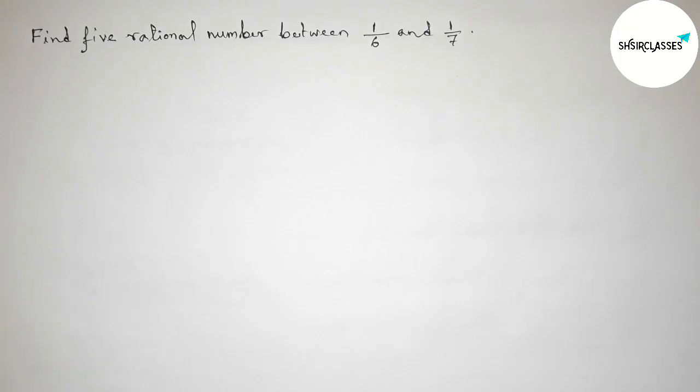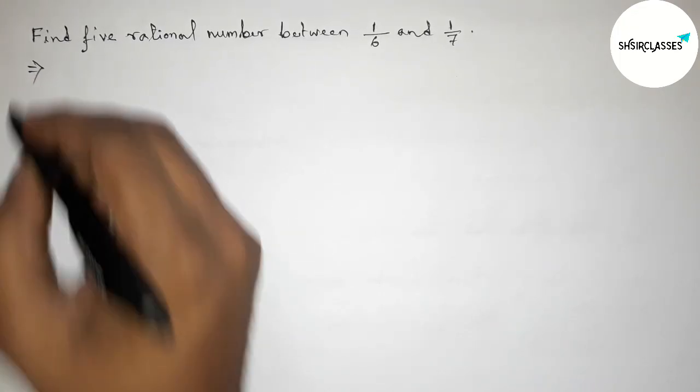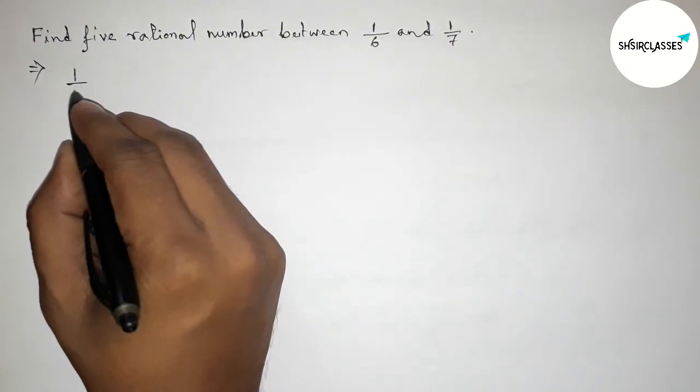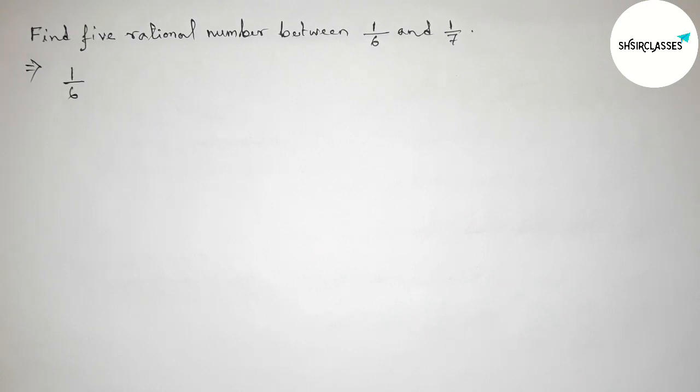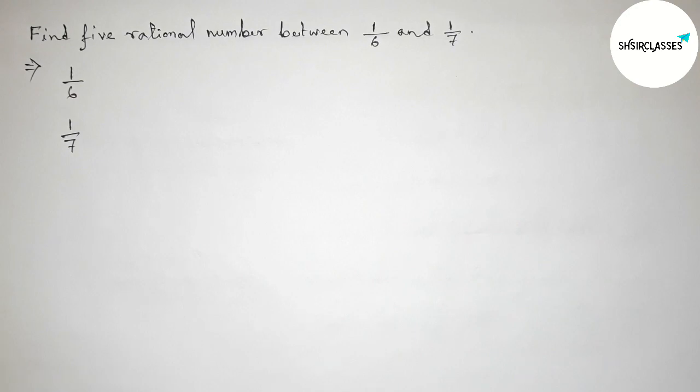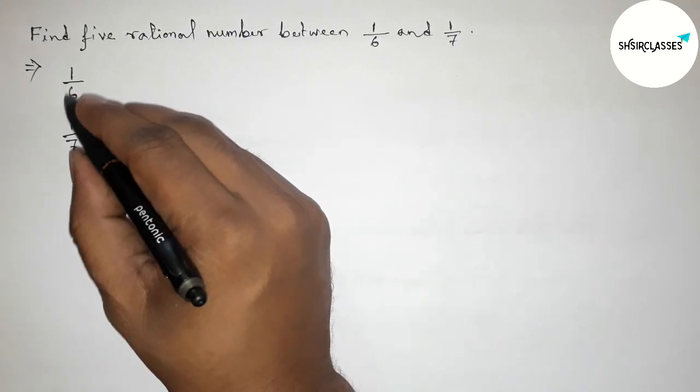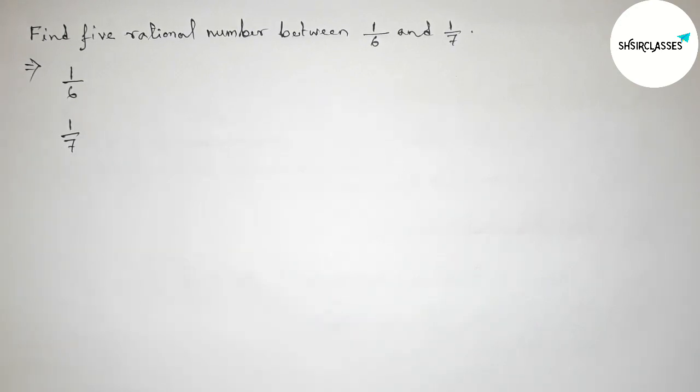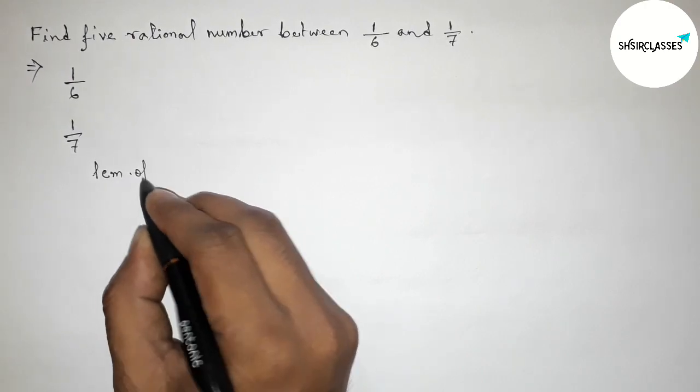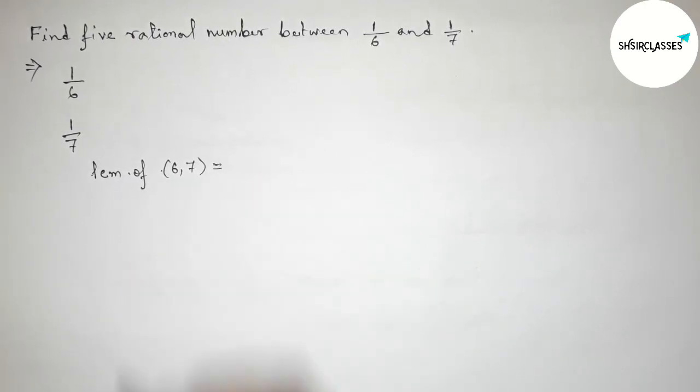First, let us solve this problem. The first rational number is 1/6 and the second one is 1/7. Both denominators are not the same, so we have to make the same denominator first.